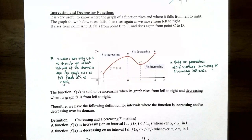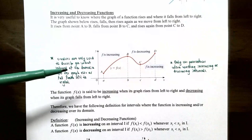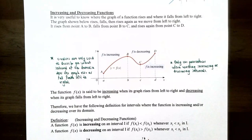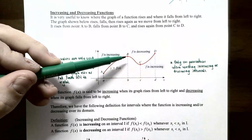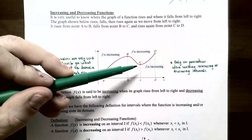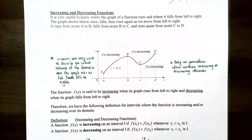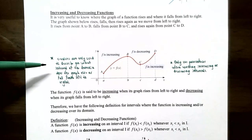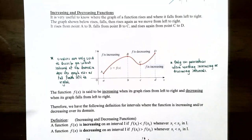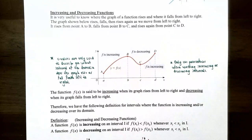Increasing and decreasing functions — it's very helpful to know when a graph of a function is either rising or falling from left to right. The graph shown rises, falls, and then rises again as we move from left to right. It rises from point A until point B, then falls from point B to point C, and then rises again from point C to point D. As we find where a graph is increasing or decreasing, we use only the x values to describe where the graph rises or falls. We always just use x values from the domain of the function, and we use open parentheses when writing increasing and decreasing intervals because the function cannot be increasing or decreasing at an endpoint — you have to consider either side of a point.